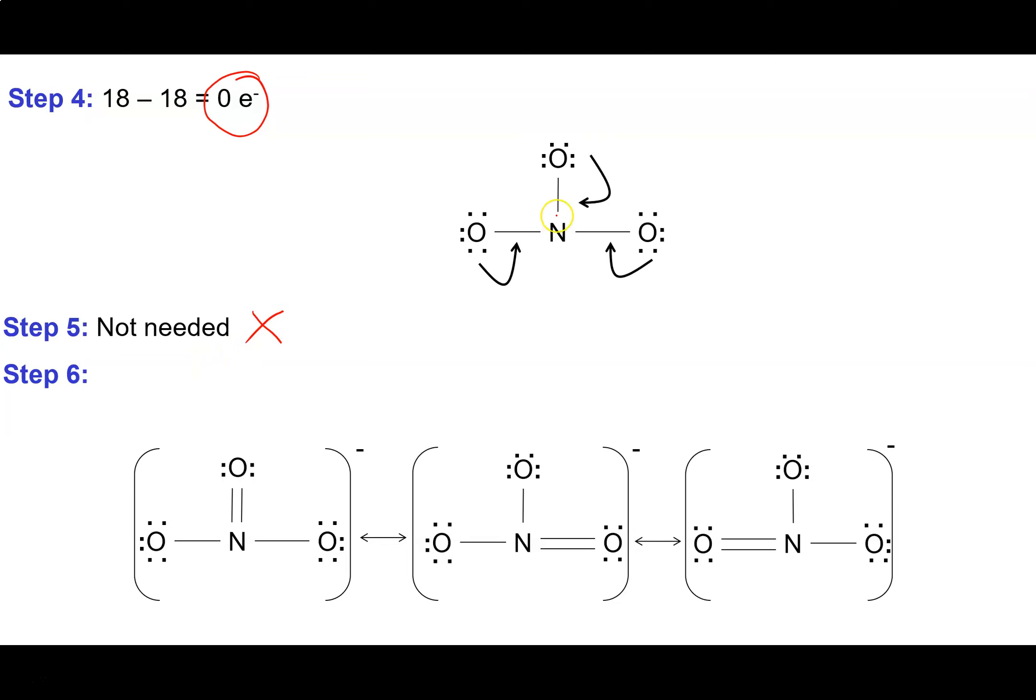Now in step six, I've got to check my central atom and see if it has an octet. 2, 4, 6, it doesn't. So I need to bring in one lone pair to get it up to an octet. Now you can see that it doesn't matter where I bring that lone pair in from, it's going to give me an equally good structure. In fact, there are three possibilities for doing this.